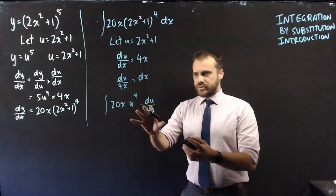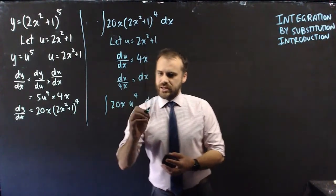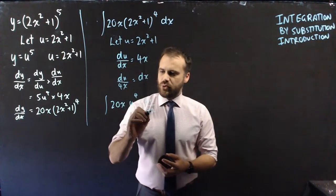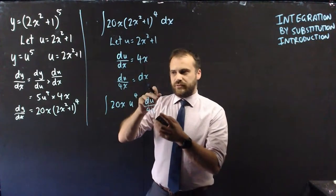Now what does that allow me to do? Well, I've got an x here and an x here. They can cancel out. I've got a 20 here and a 4 here. 20 divided by 4 is 5.